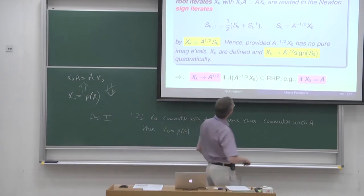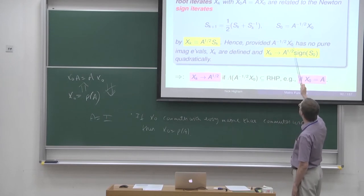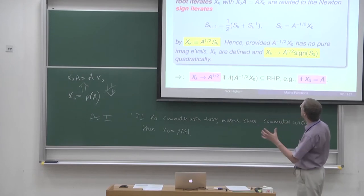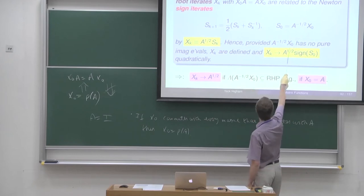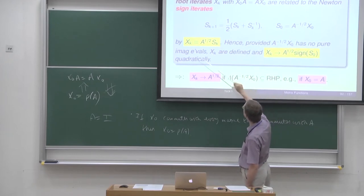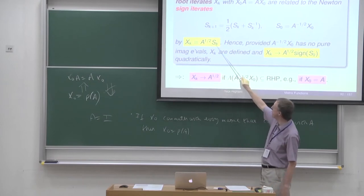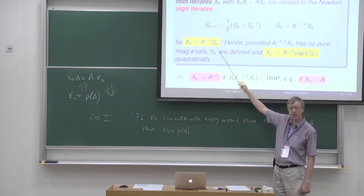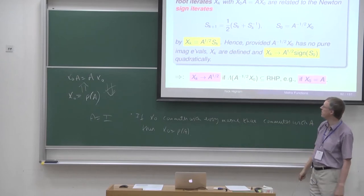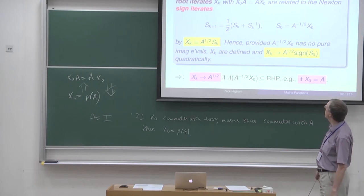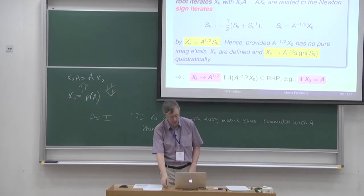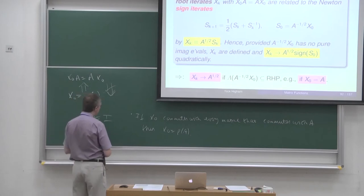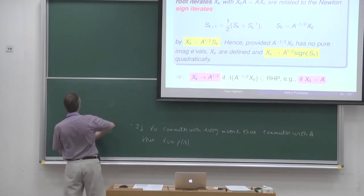The idea of the result is to define some iterates — the s's. The x's are my square root iterates, and I'm claiming the x's are related to the s's, which come from a sign iteration with a particular starting value. Proving convergence of the x's will be equivalent to proving convergence of the s's, and the convergence of the s's will follow from our previous result about convergence of the sign iteration. So all we have to do is apply that previous result to the s iteration.